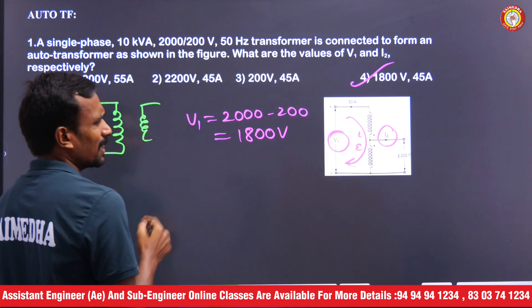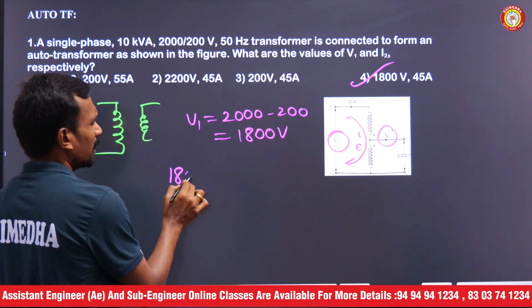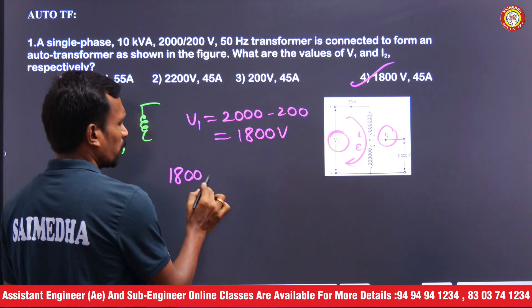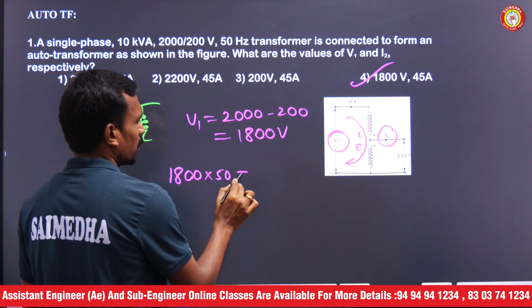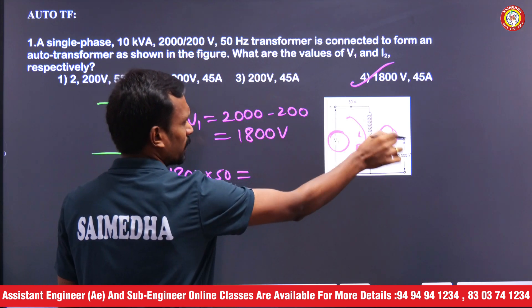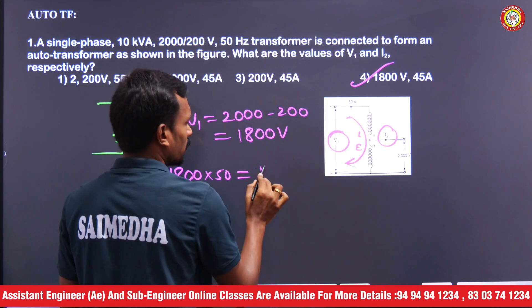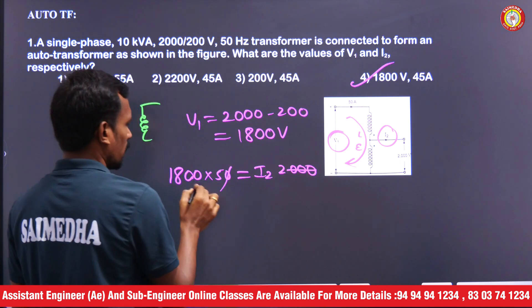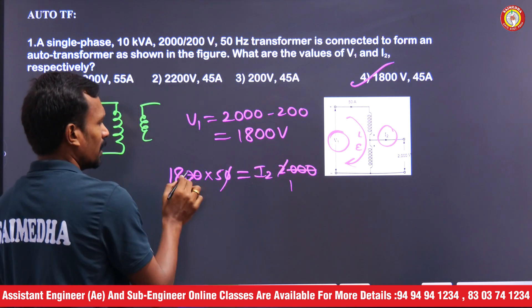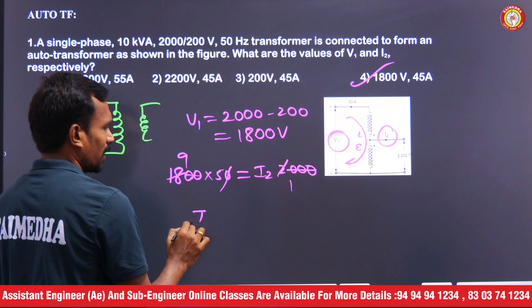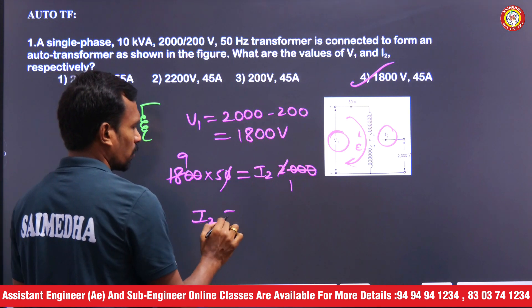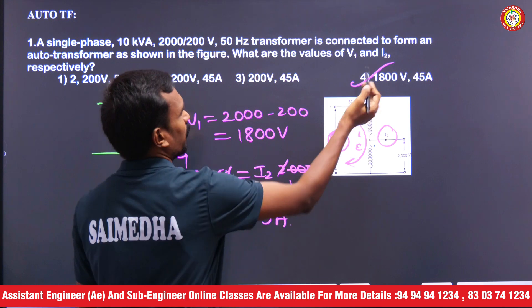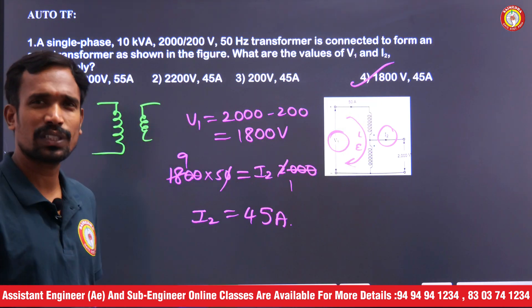The transformer is a constant power device, so voltage into current must be constant. This voltage into current equals this voltage into current. So I2 equals 45 amperes. 45 amperes is your answer — a simple question.